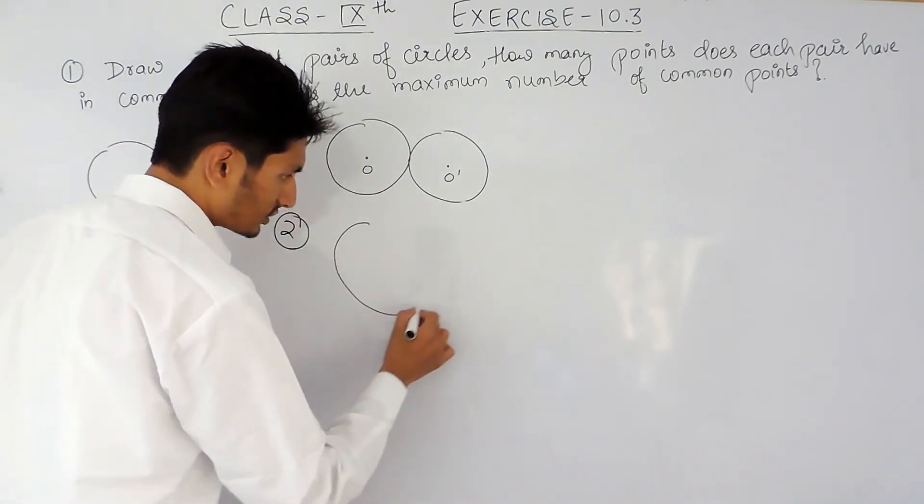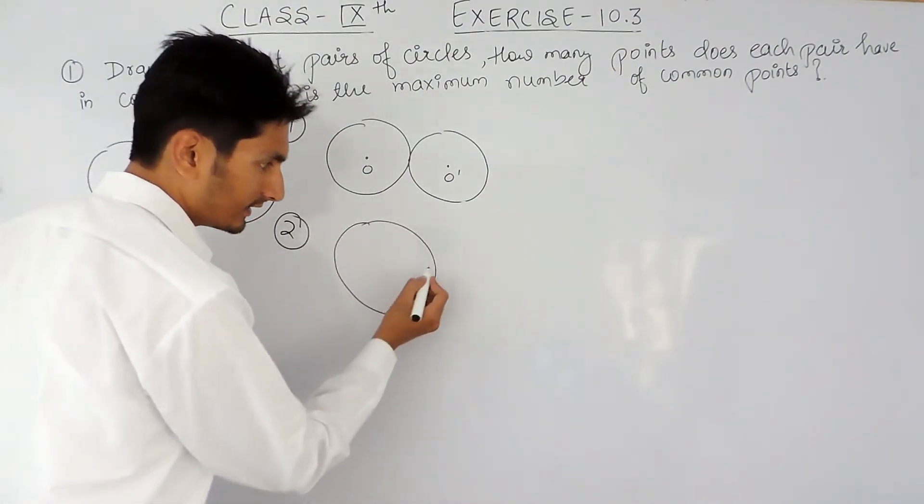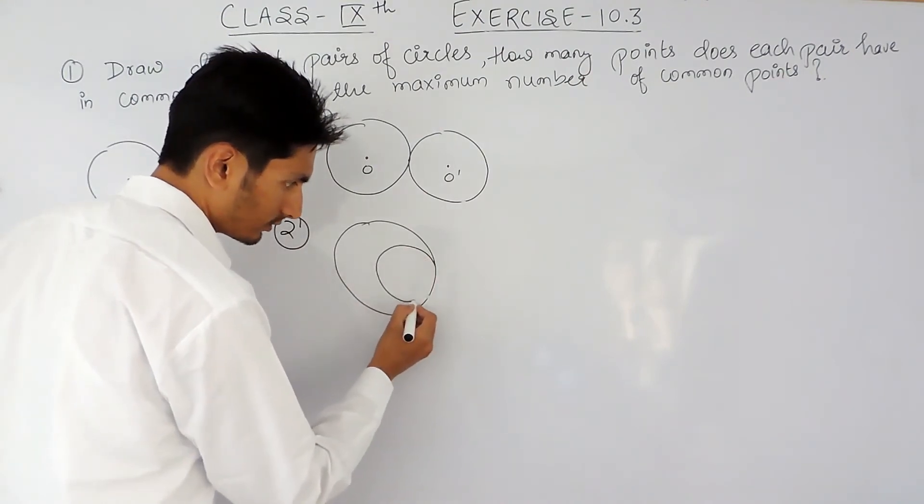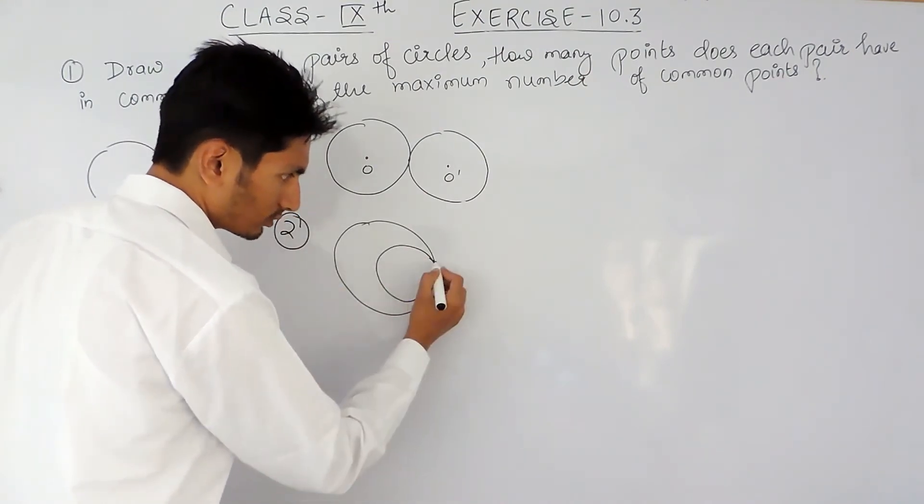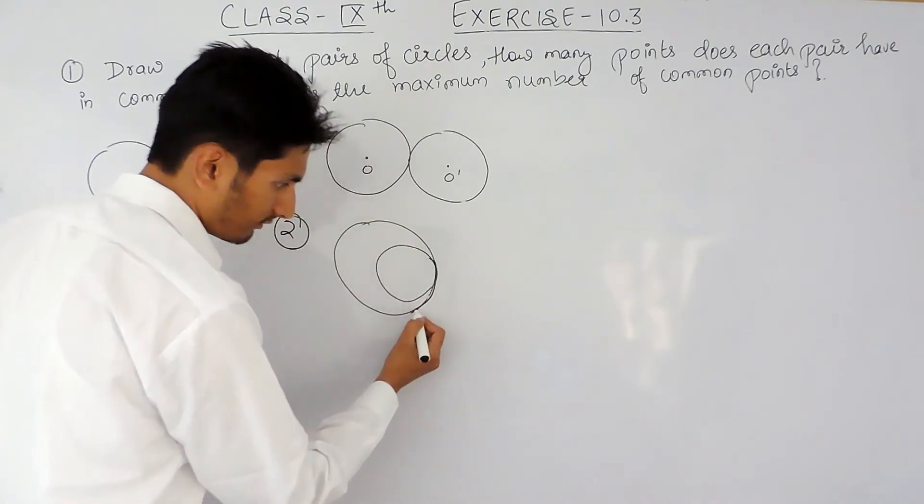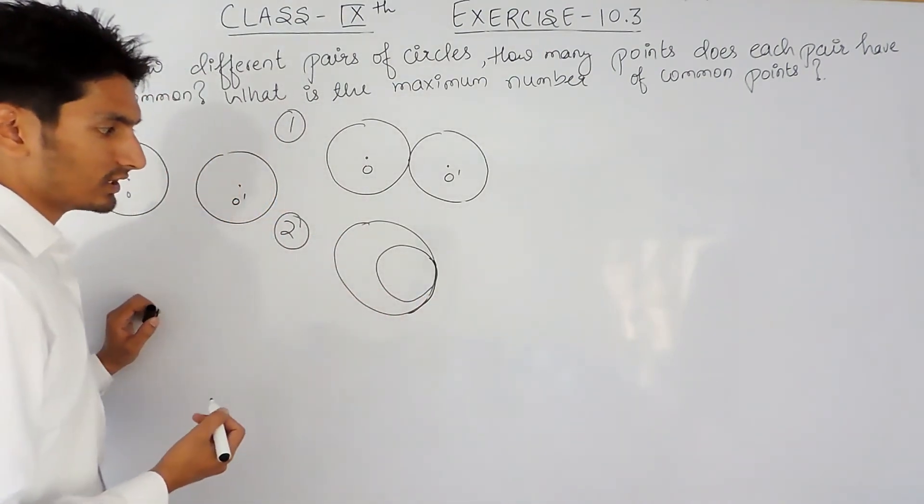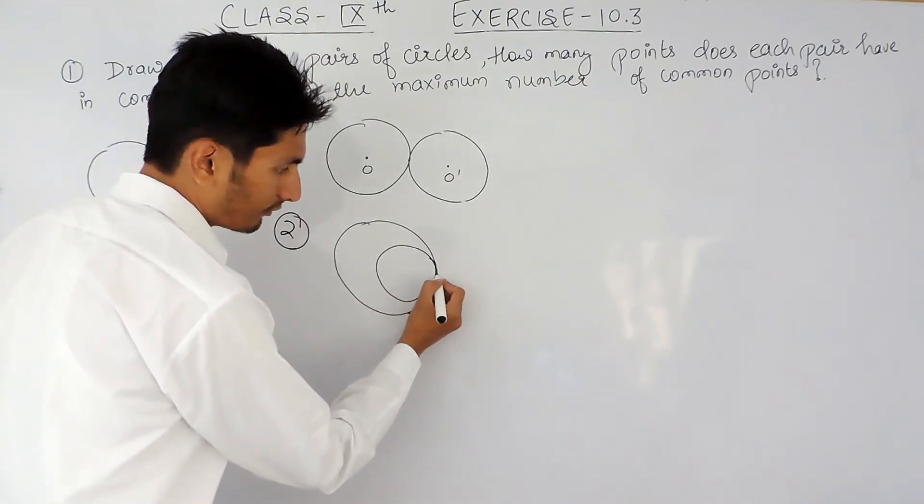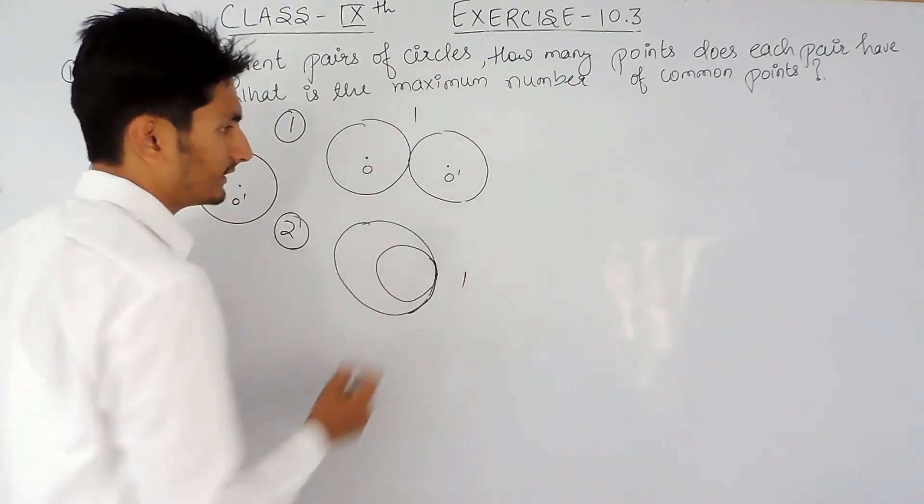...touch each other internally. So this is the case when these two circles touch each other internally. Again, the number of common points is one.